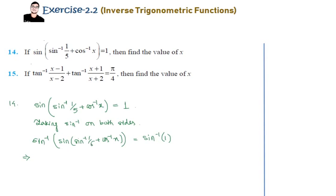The expression simplifies to just: sin⁻¹(1/5) + cos⁻¹x, because sin⁻¹ of sin cancels out. This is equal to sin⁻¹(1), and in the principal range, sin⁻¹(1) = π/2.